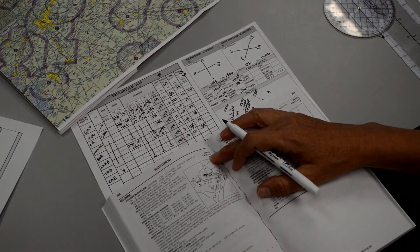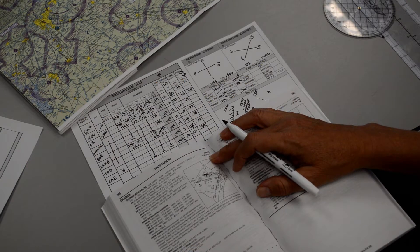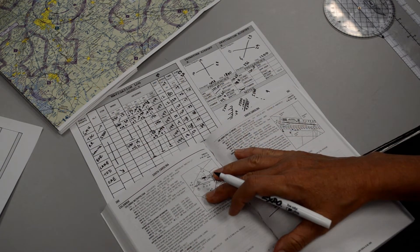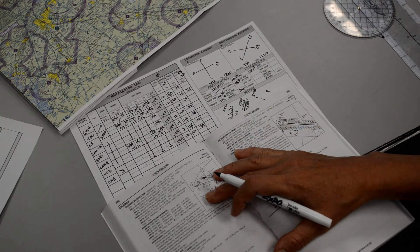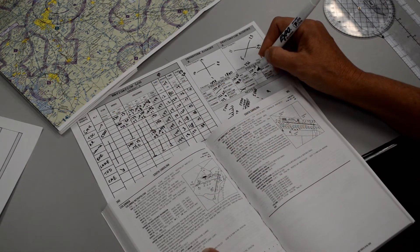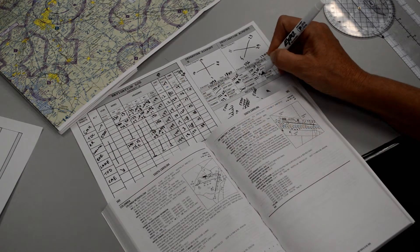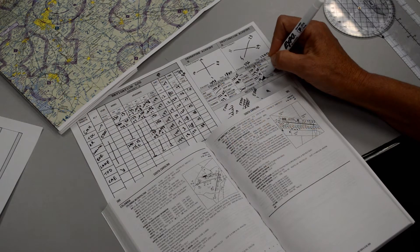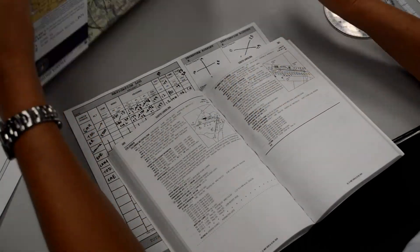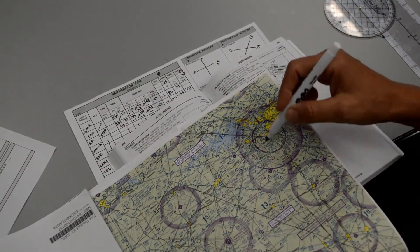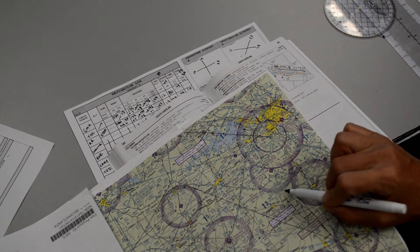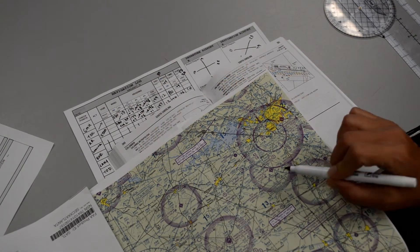Our weather frequency is going to be 120.15. They do have a clearance delivery frequency at this airport, 119.75. The ground is 121.9, tower is 119.5. The flight service station frequency in the Columbia area. So they have a VOR in Columbia. It's in blue, so I look for the blue box information that goes with it, and it says that it's Anderson Radio still, and it's 122.1 with the R.